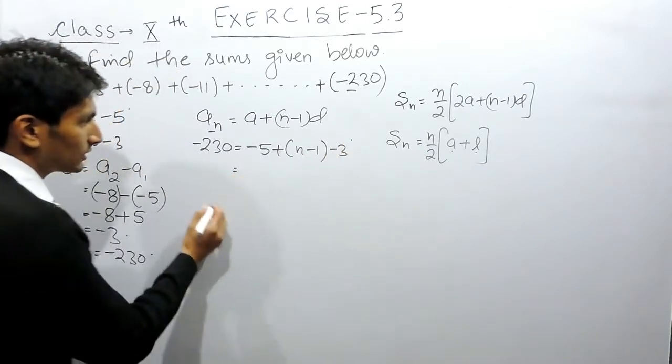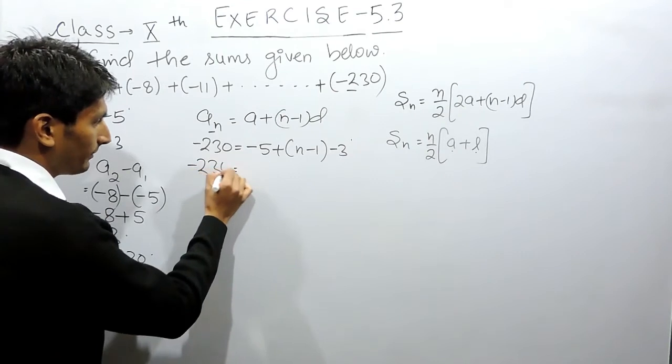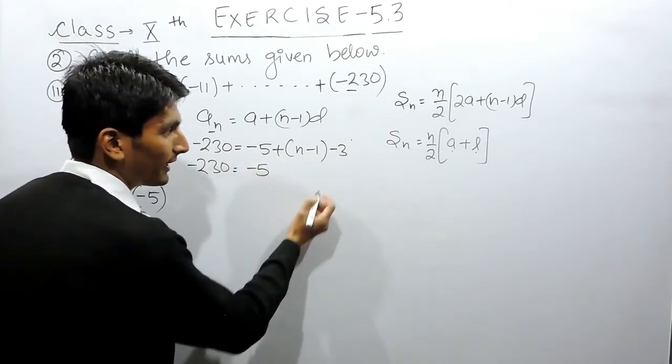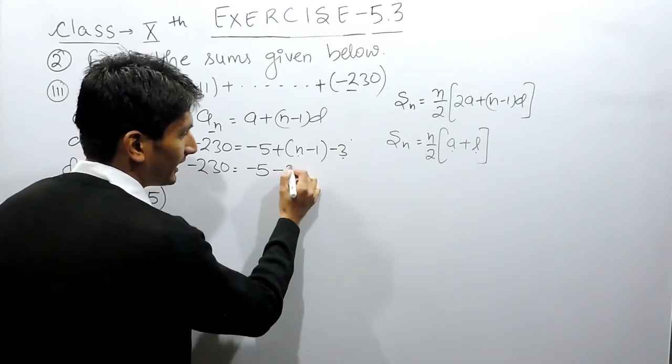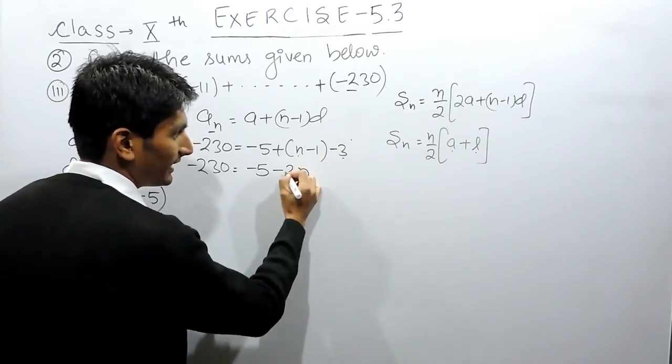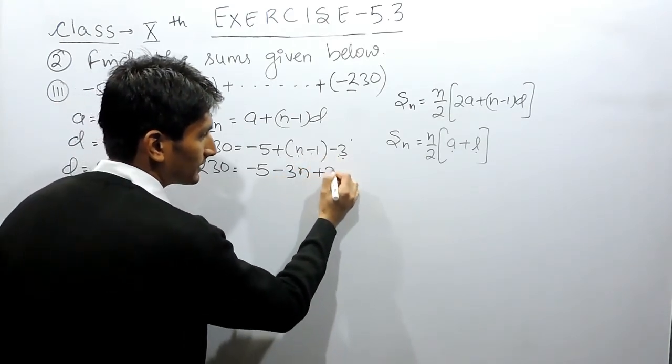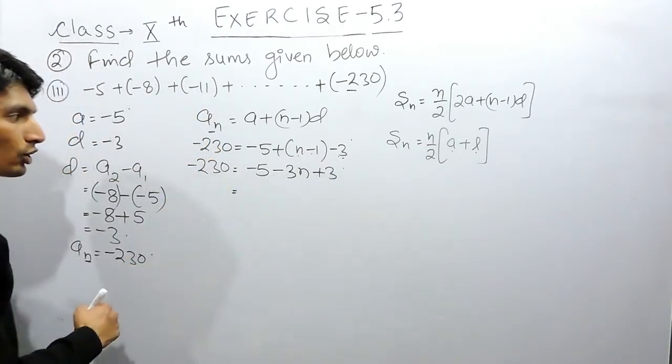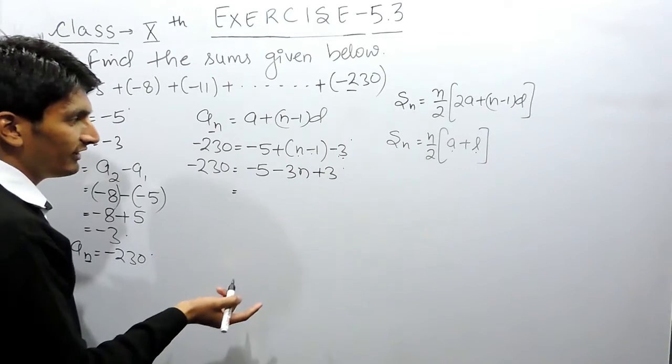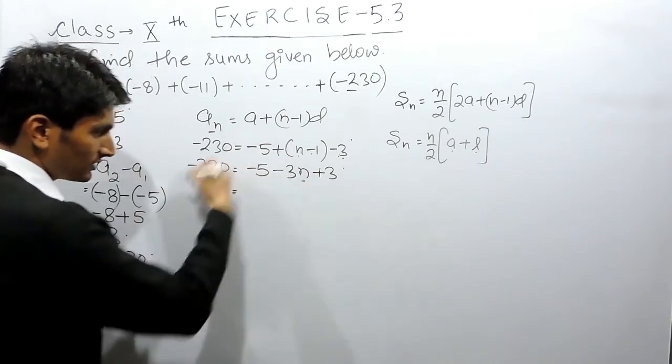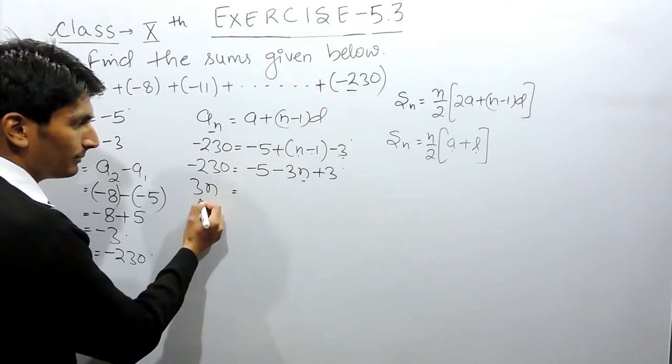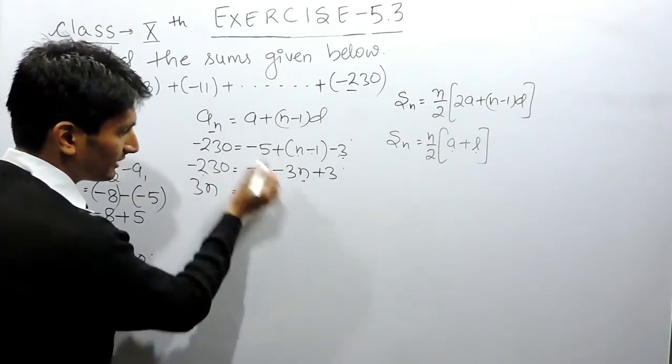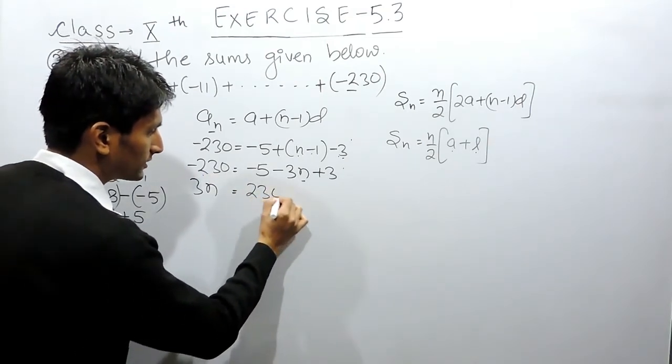This will remain as it is, -5. Now you have to open the bracket, for that you multiply -3 with n. This will give -3n. Minus minus will be plus, and this will be +3. Now we have to shift all the constants to one side and all the variables to one side. So this variable can be shifted to this side. Negative will become positive, and this negative when shifted to that side will become positive.